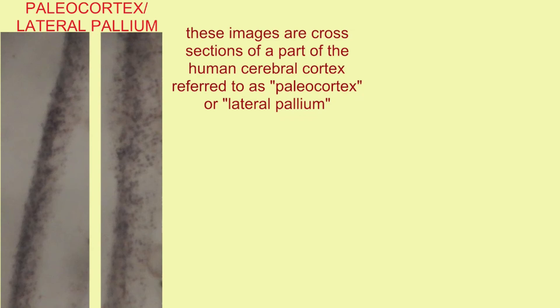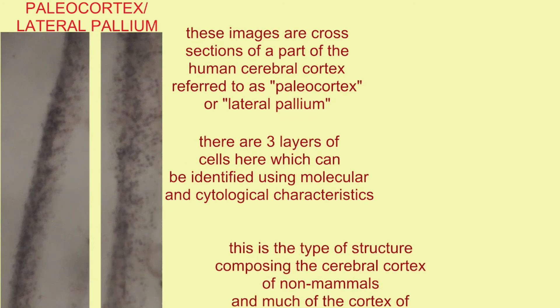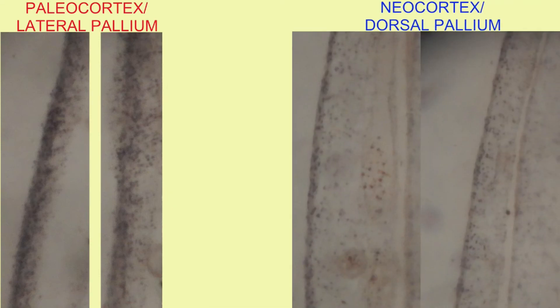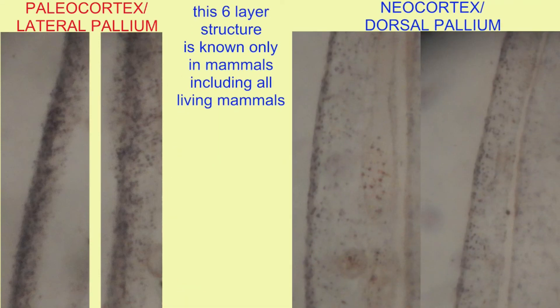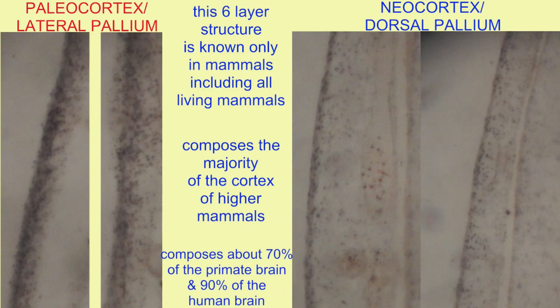Both of these two sections have the primitive form of paleocortex with three layers of cells in the cortex, as opposed to the more advanced neocortex with its six layers.